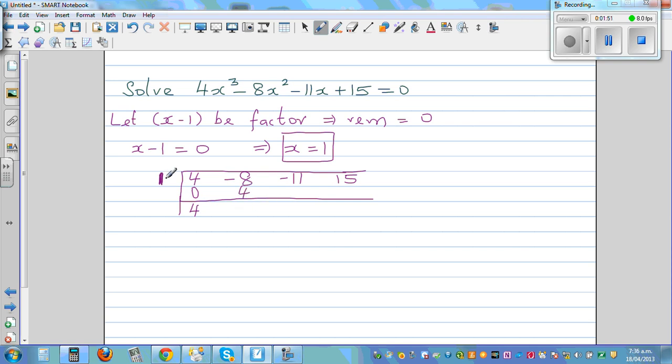You multiply these two numbers and write it here. Then you add these two numbers. Negative 8 plus 4 is negative 4. Then again, in the same process, you multiply 1 times negative 4 is negative 4.